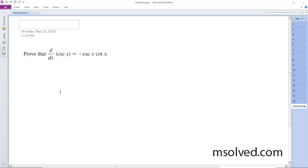All right, we want to prove that the derivative of the cosecant of x is equal to negative cosecant of x times cotangent of x.